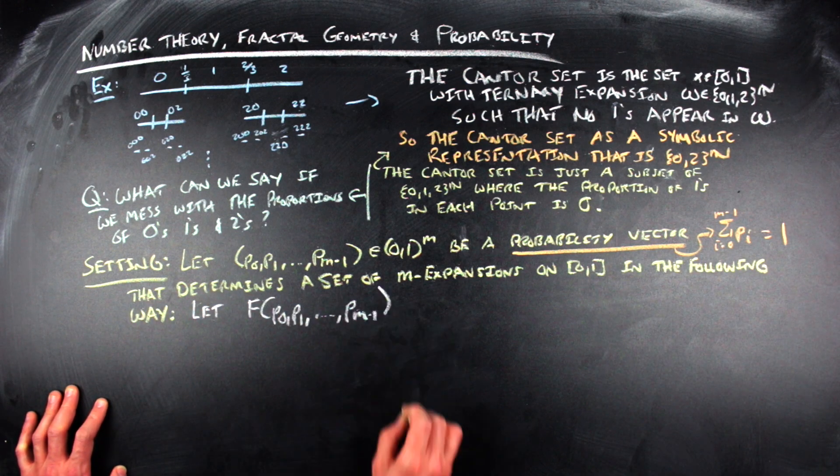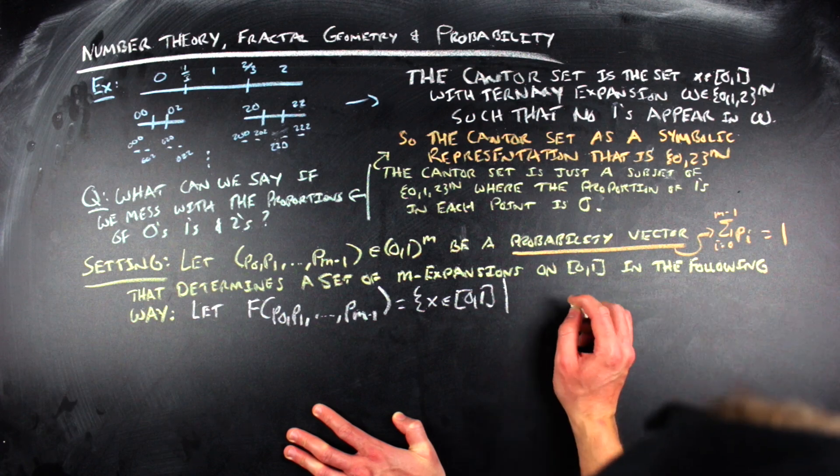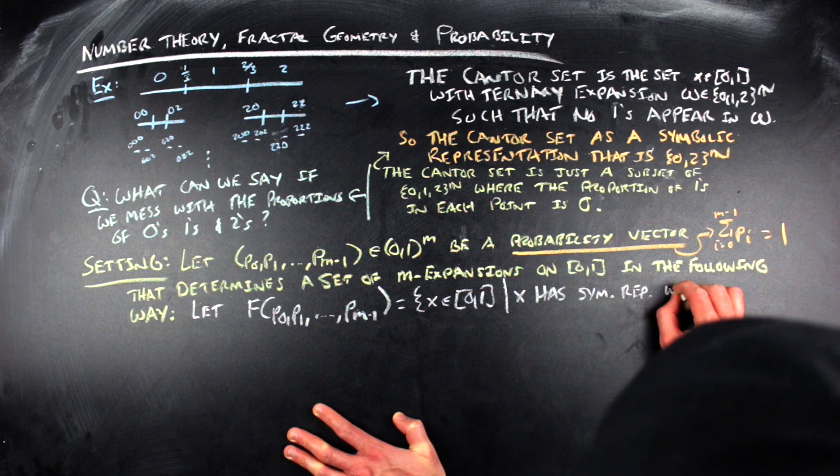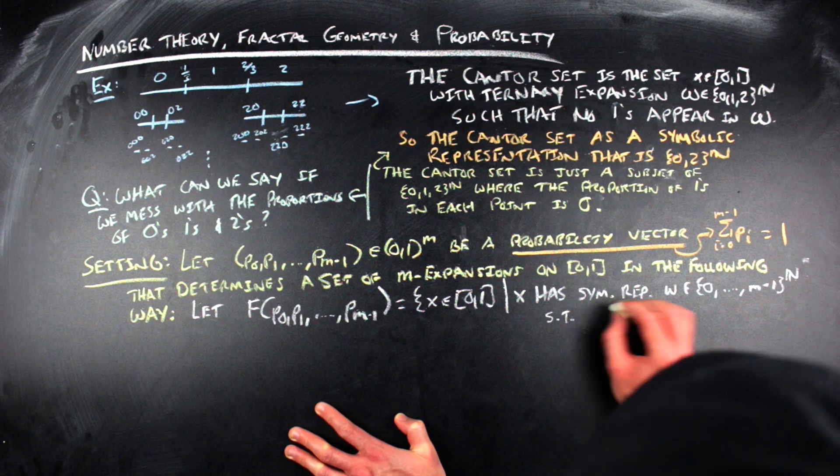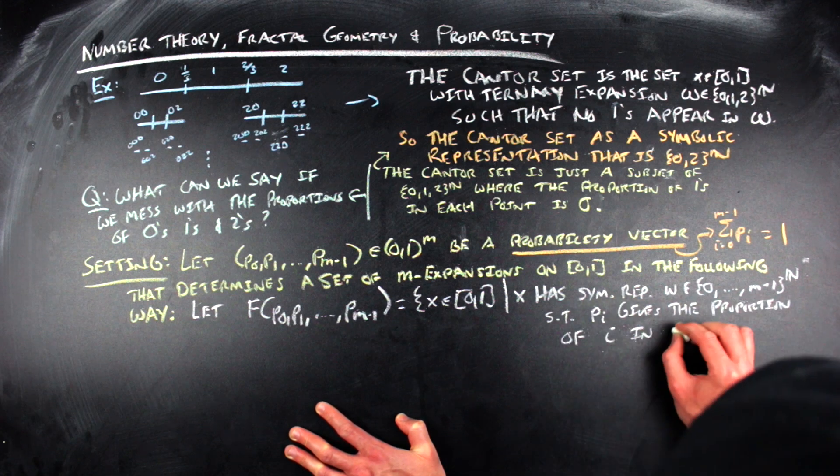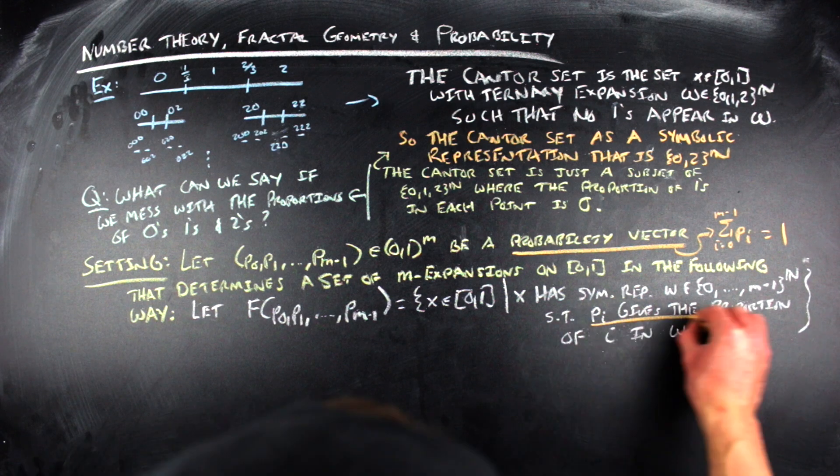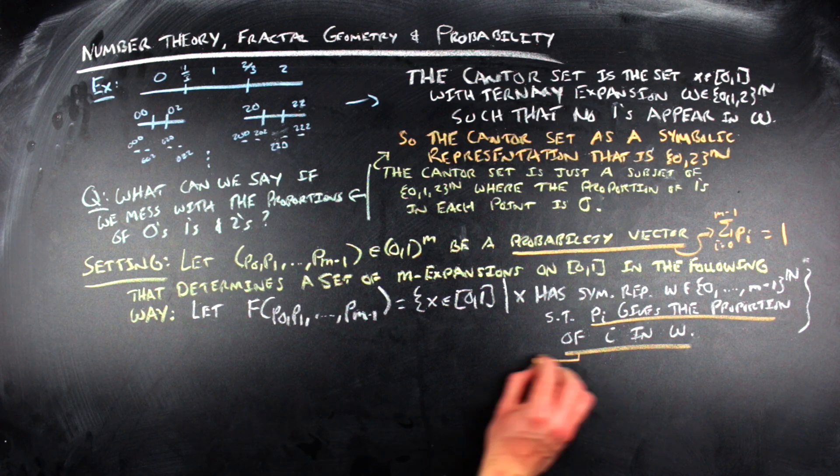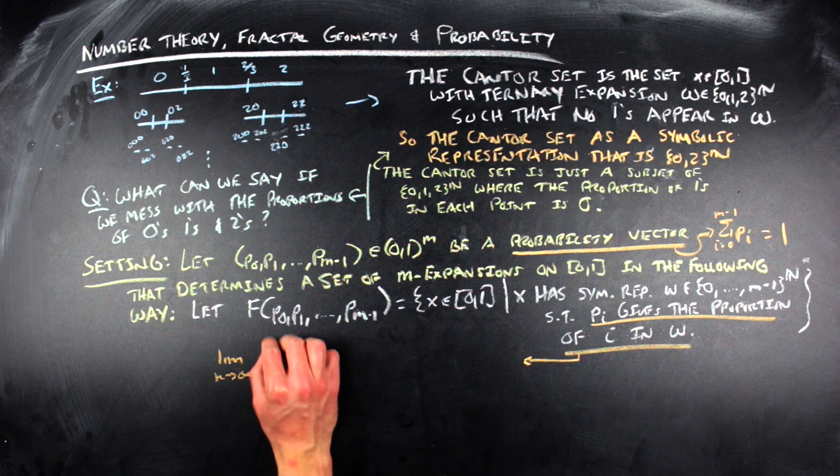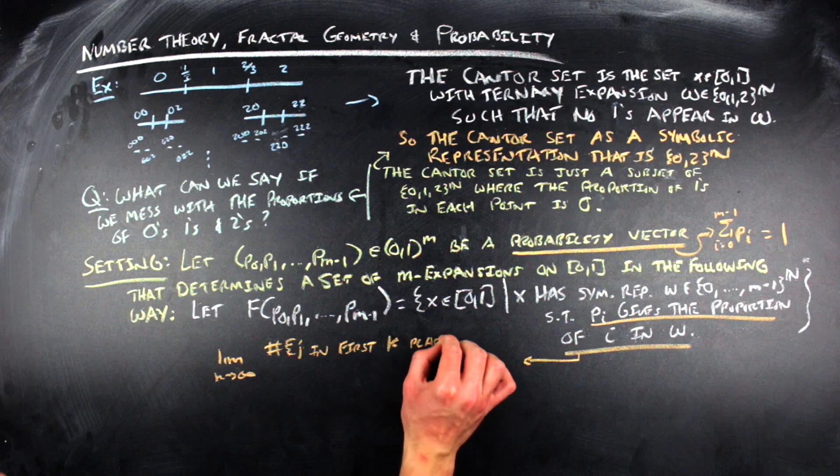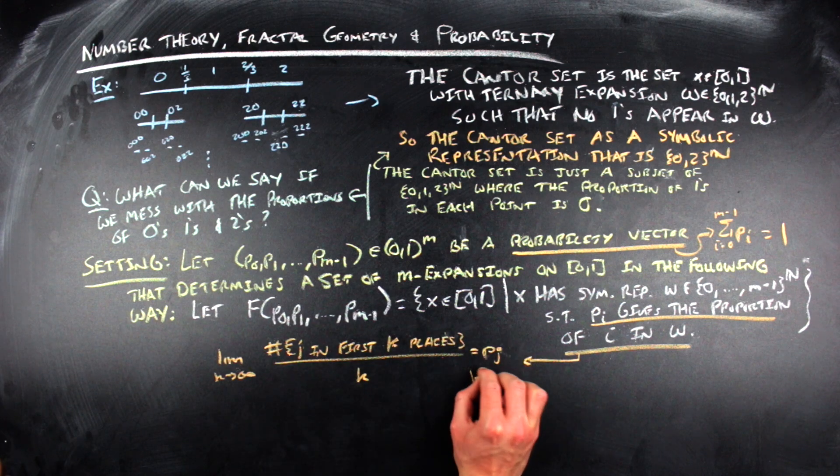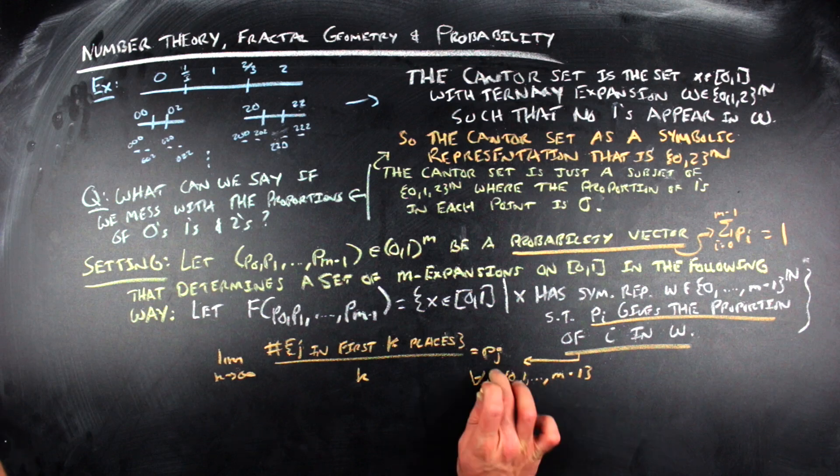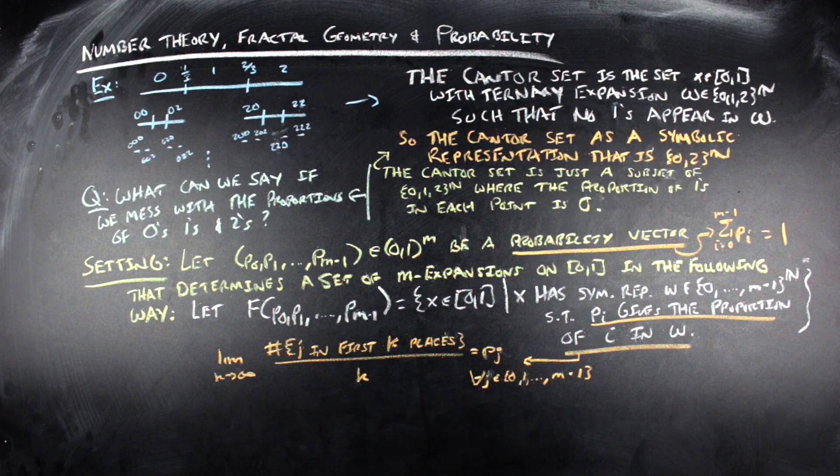We let f of the probability vector be equal to the set of x's within closed 0, 1 such that x has a symbolic representation of infinite sequences of 0s, 1s, 2s, all the way up to m minus 1s where the limit as k goes to infinity of the number of j's in the first k places divided by k is equal to the jth entry of the probability vector for all j from 0 to m minus 1.